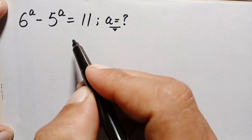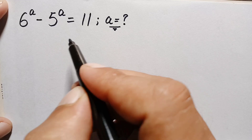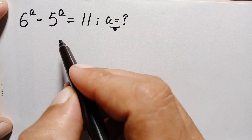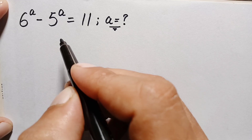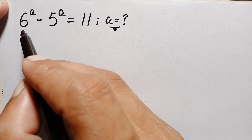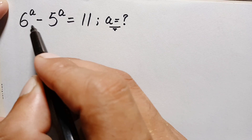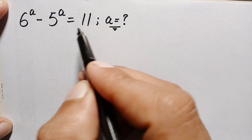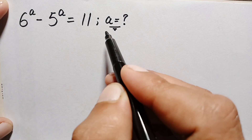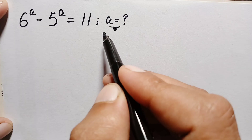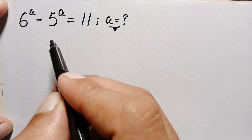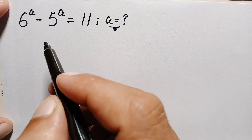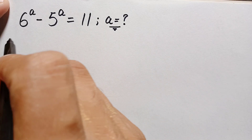Hello everyone, you are welcome. Today we have a new exponential math problem which is 6 raised to power a minus 5 raised to power a is equal to 11. We will try to find out the value of a. Let's start our solution.